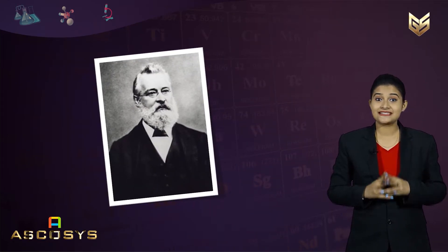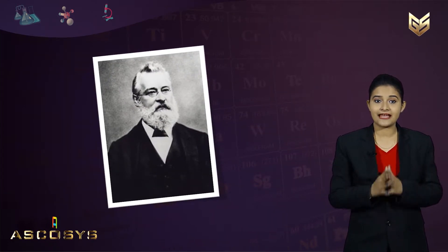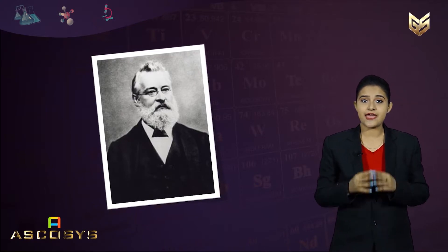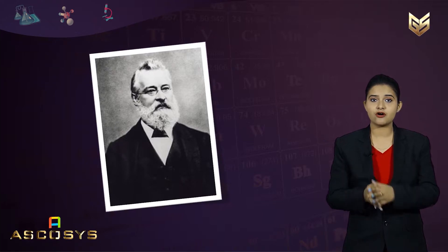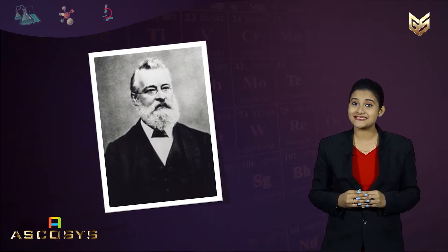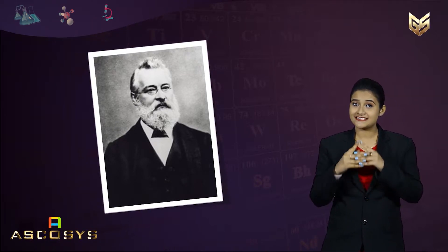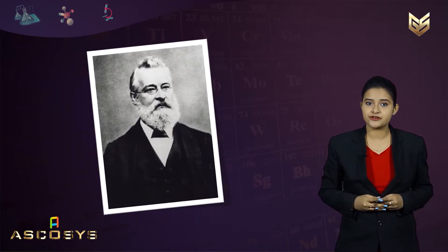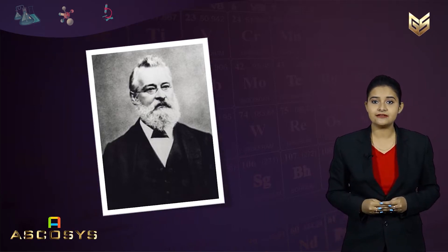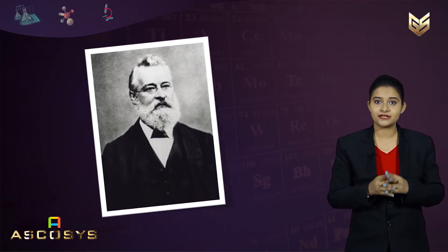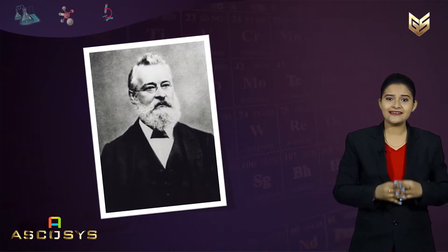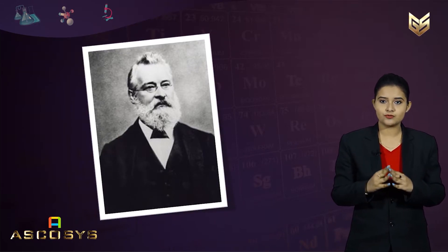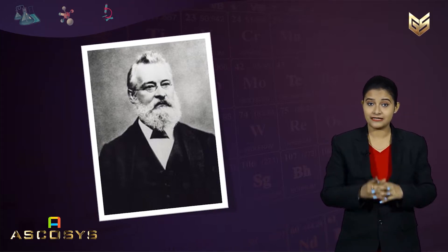In 1866, John Newlands, an English scientist, arranged the then-known elements in the order of increasing atomic masses, similar to that of Döbereiner. He started with the element having the lowest atomic mass, which is hydrogen, and ended at thorium, which was the 56th element.